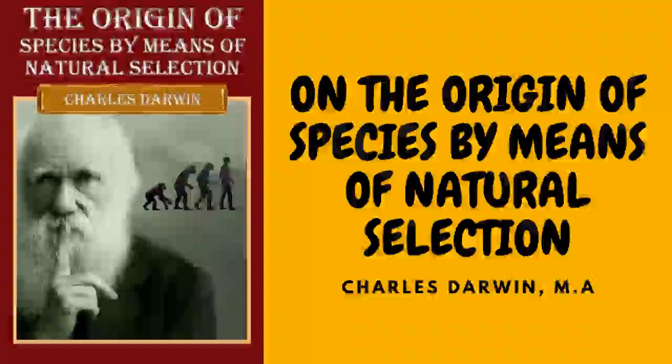Habit also has a decided influence, as in the period of flowering with plants when transported from one climate to another. In animals it has a more marked effect; for instance, I find in the domestic duck that the bones of the wing weigh less and the bones of the leg more in proportion to the whole skeleton than do the same bones in the wild duck, and I presume that this change may be safely attributed to the domestic duck flying much less and walking more than its wild parent. The great and inherited development of the udders in cows and goats in countries where they are habitually milked, in comparison with the state of these organs in other countries, is another instance of the effect of use.